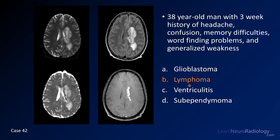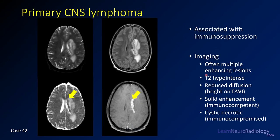This is a case of lymphoma — a pretty classic case. What you have is a nodular T2 hypointense enhancing abnormality along the margins of the ventricle. It's multifocal. It's dark on ADC — on DWI it would be bright. And you've got some FLAIR abnormality around it.